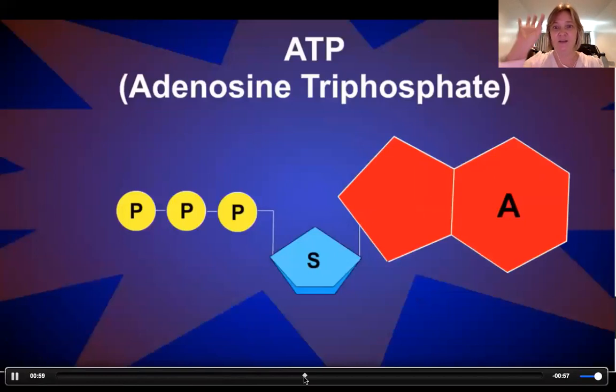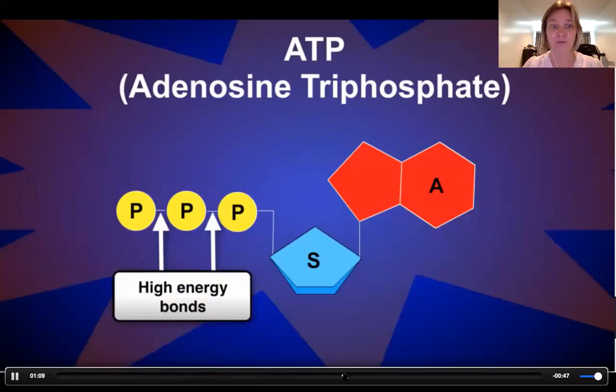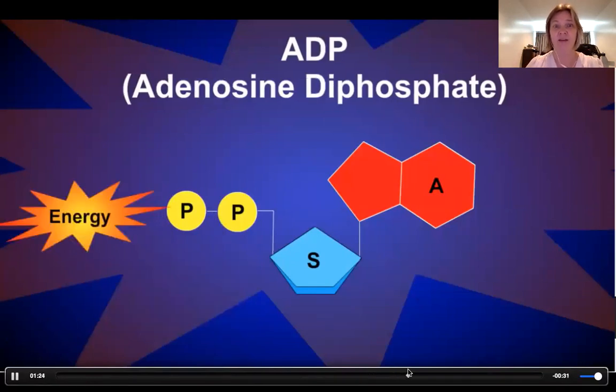So here's ATP. In the red, that's adenine. That is a nitrogenous base, which is actually part of DNA as well. The blue one is the sugar. And then you've got three P's there. Each P represents a phosphate. When you take a phosphate off, because the bonds between the phosphates are high energy, when you break those bonds, it releases energy. And then you have adenosine diphosphate, ADP. So ADP plus P equals ATP. And that energy can be used for cellular activity.